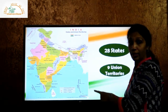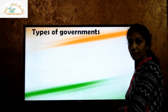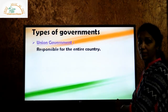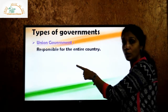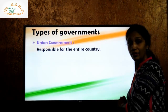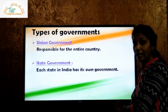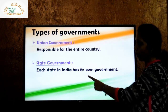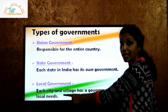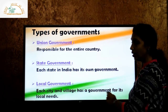Since India is a big country, the governments are functioning at different levels. The types of governments are: Union government, which is also called the central government — responsible for handling the administrative work of the entire country. Next we have state government, since India is divided into 28 states, each state has their own government. And the next is local government, which takes care of cities and villages.